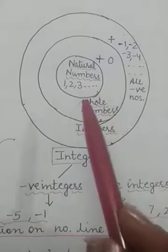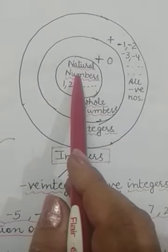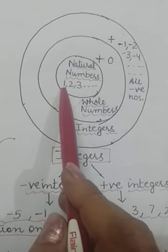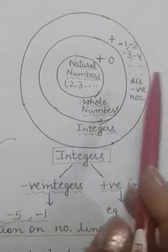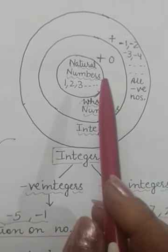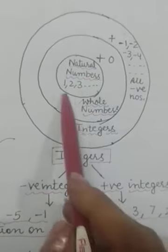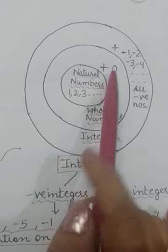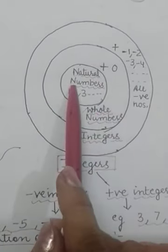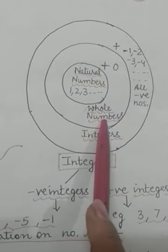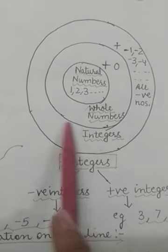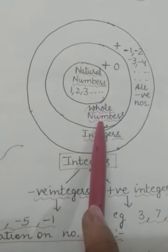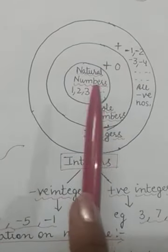The smaller circle represents the smallest group of numbers — natural numbers. In maths you started your knowledge with natural numbers, which start from 1 and are infinite. You can't imagine the biggest natural number. Now if I add 0 to this collection of natural numbers, this whole collection — natural numbers plus 0 — is called whole numbers, which we covered in the previous chapter. So this collection becomes bigger.